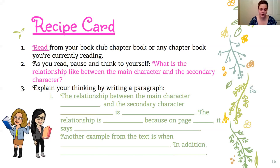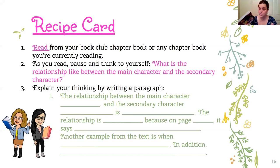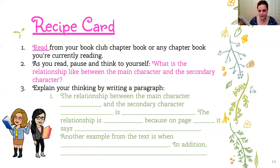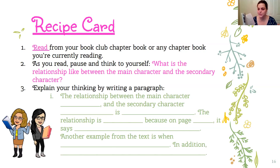Let's take a look at our recipe card. Number one is that you want to read from your book club chapter book or any chapter book you're currently reading. Some of you might have already finished your book club book, which is great — you can use it for this task. Or if you have another chapter book, you can use that as well. Number two: as I read, I'm going to pause and think to myself, what is the relationship like between the main character and the secondary character? Remember, a secondary character is not the main character — it might be some of the other characters mentioned in the book.